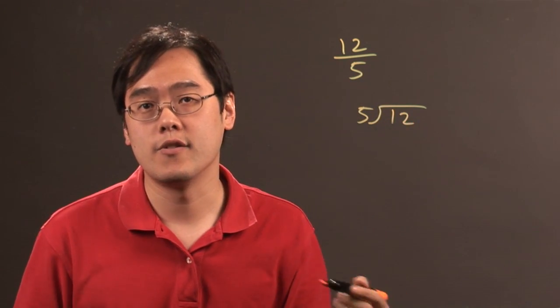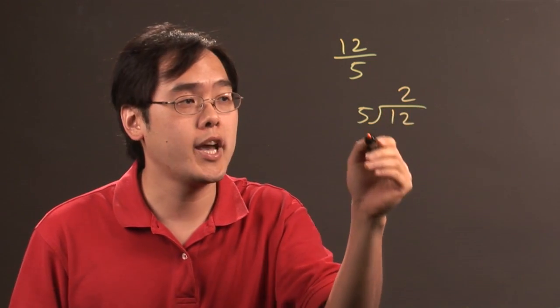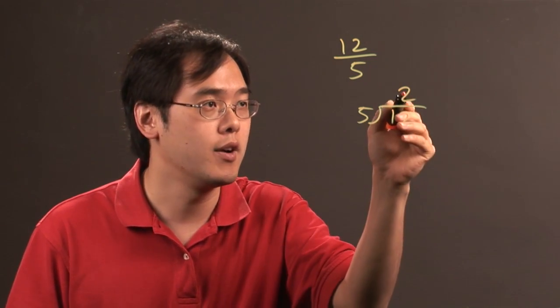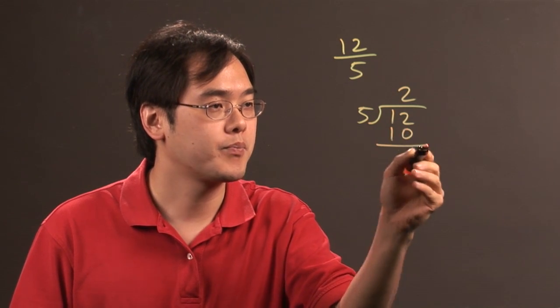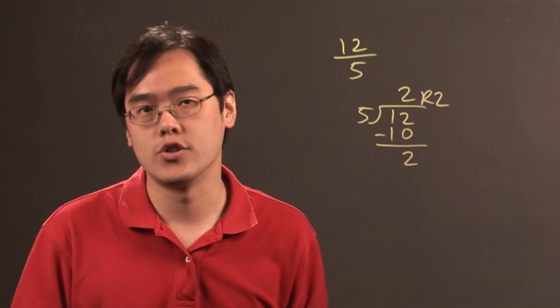And then you have to ask yourself 5 goes into 12 how many times? That's going to be 2, and then you do the basic multiplication subtraction remainder. 2 times 5 is 10, 12 minus 10 is 2, so it's going to be 2 remainder 2.